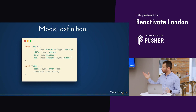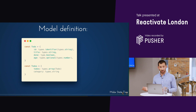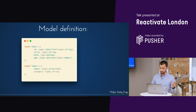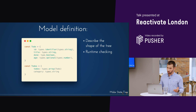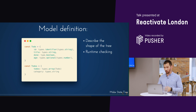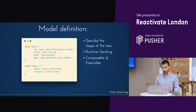Through MobX State Tree we can have model definitions. We have two small models — a ToDo object and a ToDoList object — where we declare the structure with types: strings, booleans, arrays, maps, and more. The reason we use this is to describe the shape, which gives us runtime type checking. As soon as you boot the application, you'll see if an object passed through is not what was required or has a different shape. You can also compose different objects, stores, or trees, and extend them.